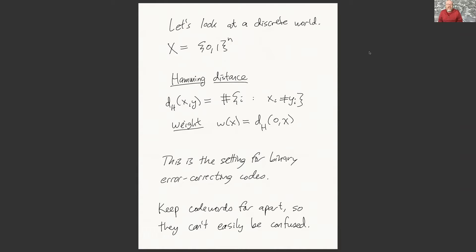The natural distance to put on this is the Hamming distance. If you want to know the Hamming distance between two binary vectors x and y, just count up how many coordinates they differ in. We'll also use the term weight to refer to the Hamming distance to the zero vector — in other words, the number of ones among our coordinates.